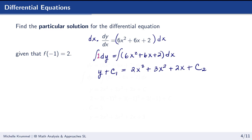Substituting c equals 3 back into our general solution gives the particular solution: y equals 2x cubed plus 3x squared plus 2x plus 3.